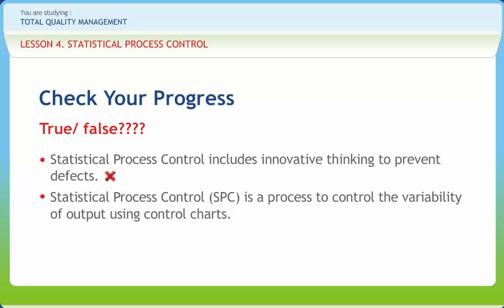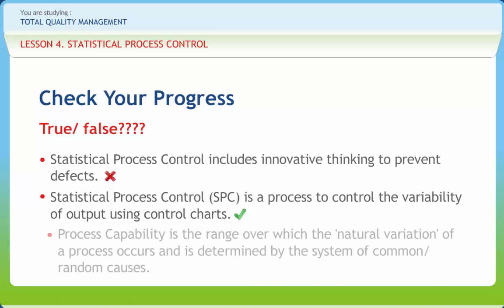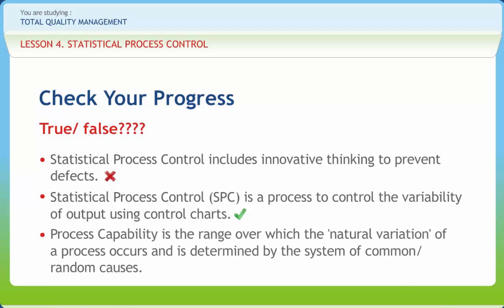Right or Wrong? Right. Process capability is the range over which the natural variation of a process occurs and is determined by the system of common random causes. Right or Wrong? Right.